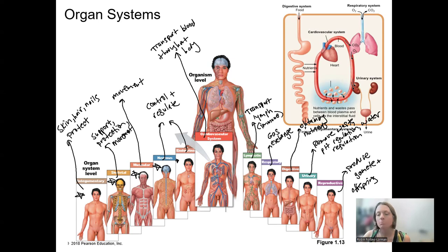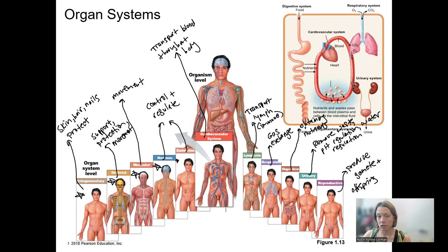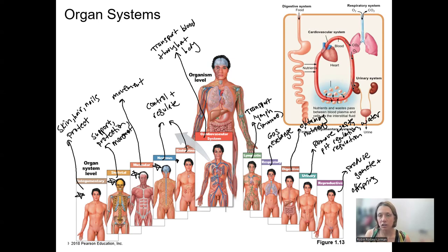Another big one is blood pressure, which is regulated by the urinary system regulating water — how much you urinate. But how much our digestive system absorbs water also makes a difference. Your heart, how hard it's pumping, also regulates blood pressure. And blood pressure is hugely regulated by the nervous and endocrine systems as well. These are things that are homeostatically maintained — blood pressure, various nutrient levels, oxygen levels — all organ systems help to maintain homeostatic levels. Maintaining blood pressure within a certain range ultimately relies on the function of all organ systems.